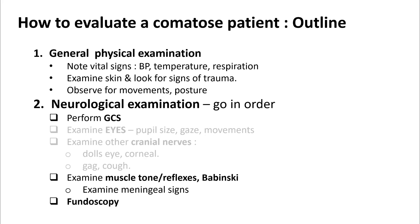This is an outline of how to evaluate a comatose patient. There's a general physical examination that you perform on all patients and a neurological examination. In the general physical examination, pay attention to vital signs, look for signs of trauma, examine skin carefully, and observe for movements and posture. In the neuro exam, always go in order: perform a GCS, examine eyes and cranial nerves, followed by muscle tone, reflexes, Babinski, meningeal signs, and fundoscopy.